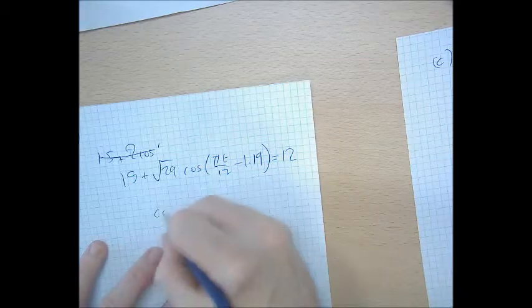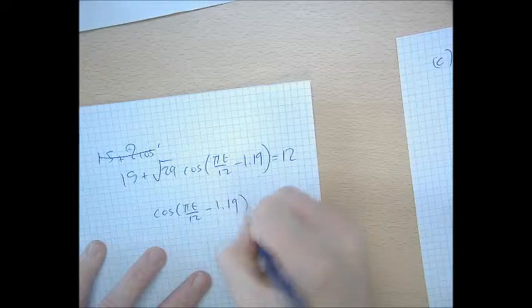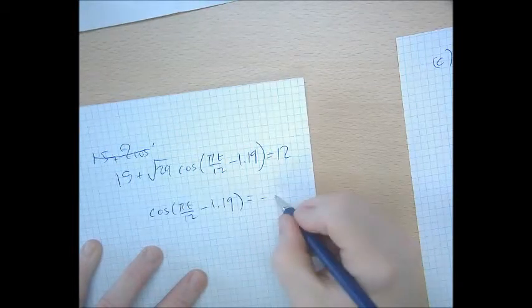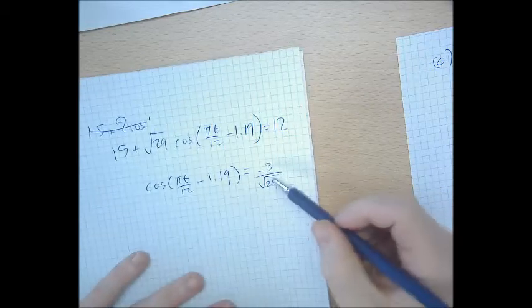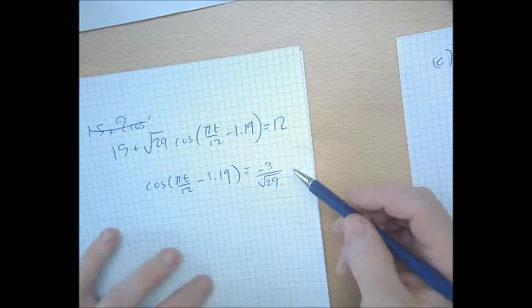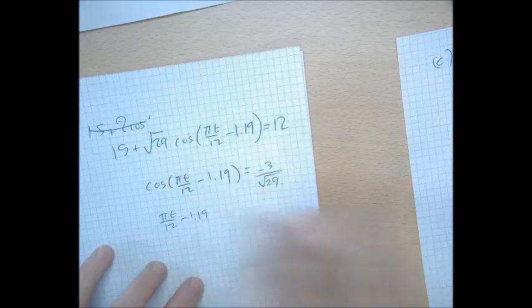Solve the equation: cos(πt/12 minus 1.19) equals negative 3 over root 29. The most basic angle that spits out of a calculator when you do that is what? It's just shift cos of something.